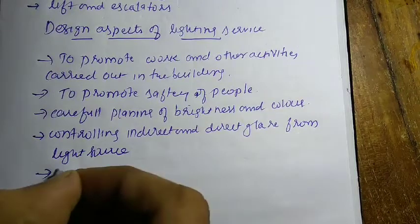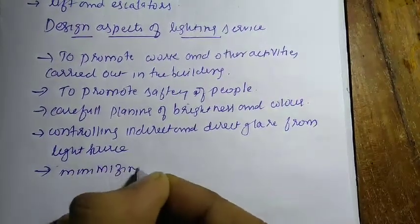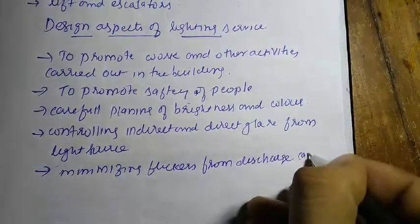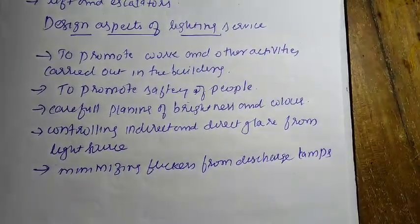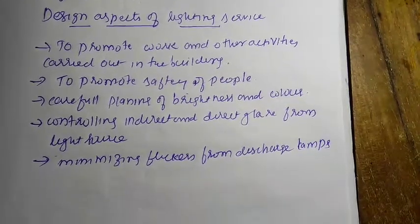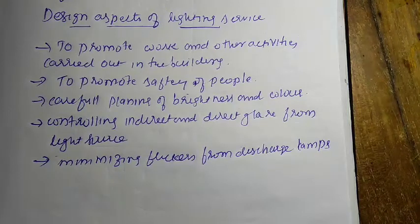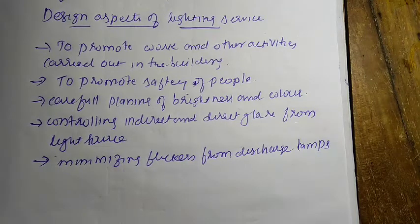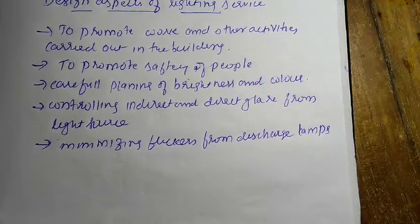Minimizing flicker from discharge lamps is important. Gas-tube-filled lamps and discharge lamps such as tube lights produce flicker. Modern tube lights use an electronic ballast, which minimizes flicker. So electronic ballast lights are used for minimizing flicker from discharge lamps.